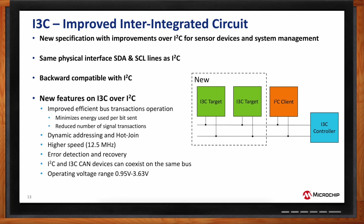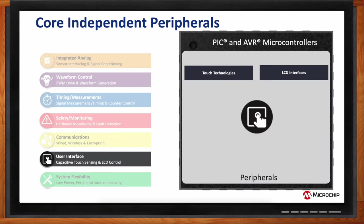User interface peripherals cover LCD interfaces and capacitive touch technologies. PIC devices implement something called mTouch, while AVR devices have the PTC. The basic difference is that mTouch is more open with the software — you can make tweaks and changes, but it's a little more complex — while PTC hides more from the customer, making it higher level and easier to implement, though with less flexibility. As you increase flexibility, you increase complexity.